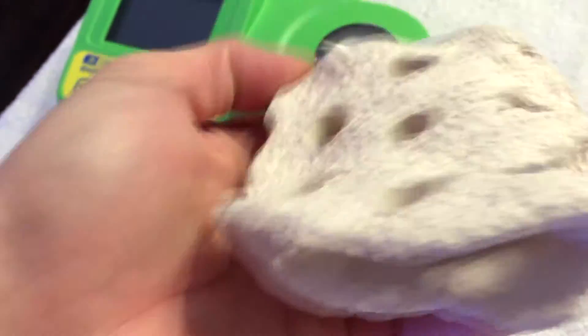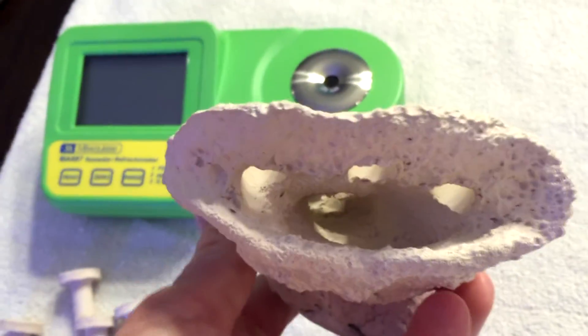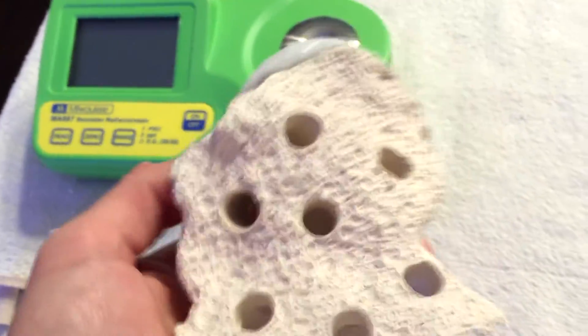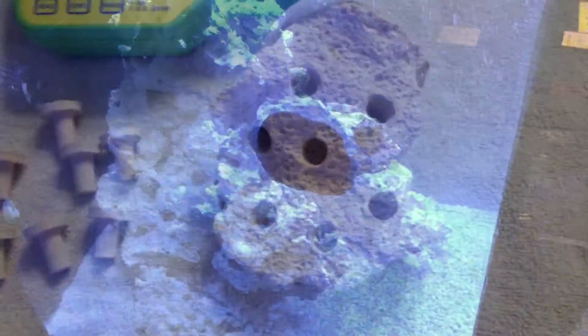This is just the bottom of it, so from the tank standpoint you won't even see the bottom part of the frag rack. It's the Alternative Reef - they're a forum sponsor on Reef2Reef. I highly recommend getting on there and checking them out. It's a really nice piece of equipment.